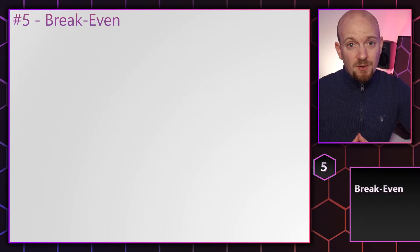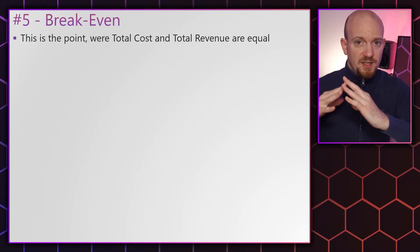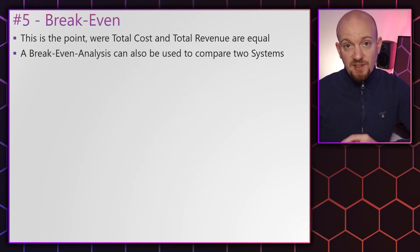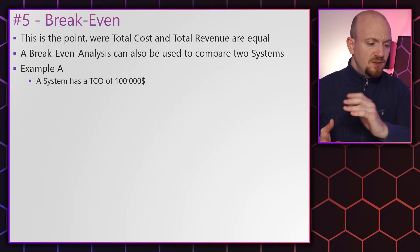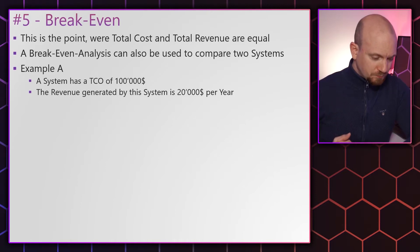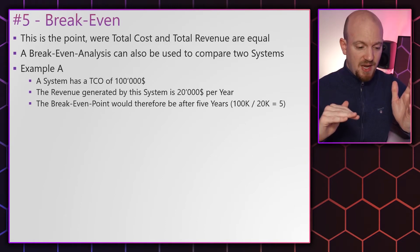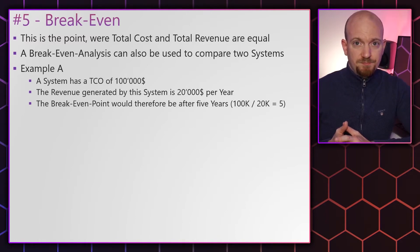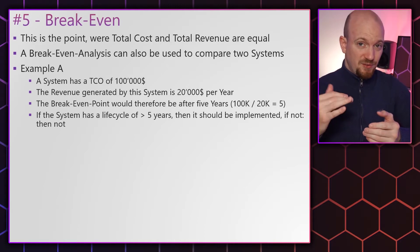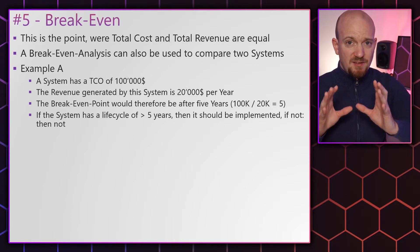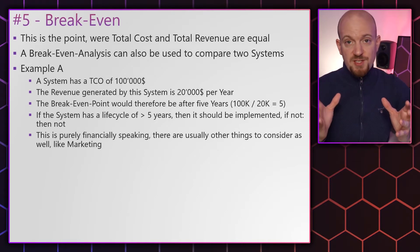Another business term you'll hear quite often is break even. Break even is the point where total cost and total revenue are equal. You can use a break-even analysis to compare two systems. For example, if a system has a TCO of $100,000 and generates revenue of $20,000 per year, the break-even point would be after five years — $100,000 divided by $20,000 per year equals five years. If the system has a life cycle over five years it should be implemented; if less, then not.